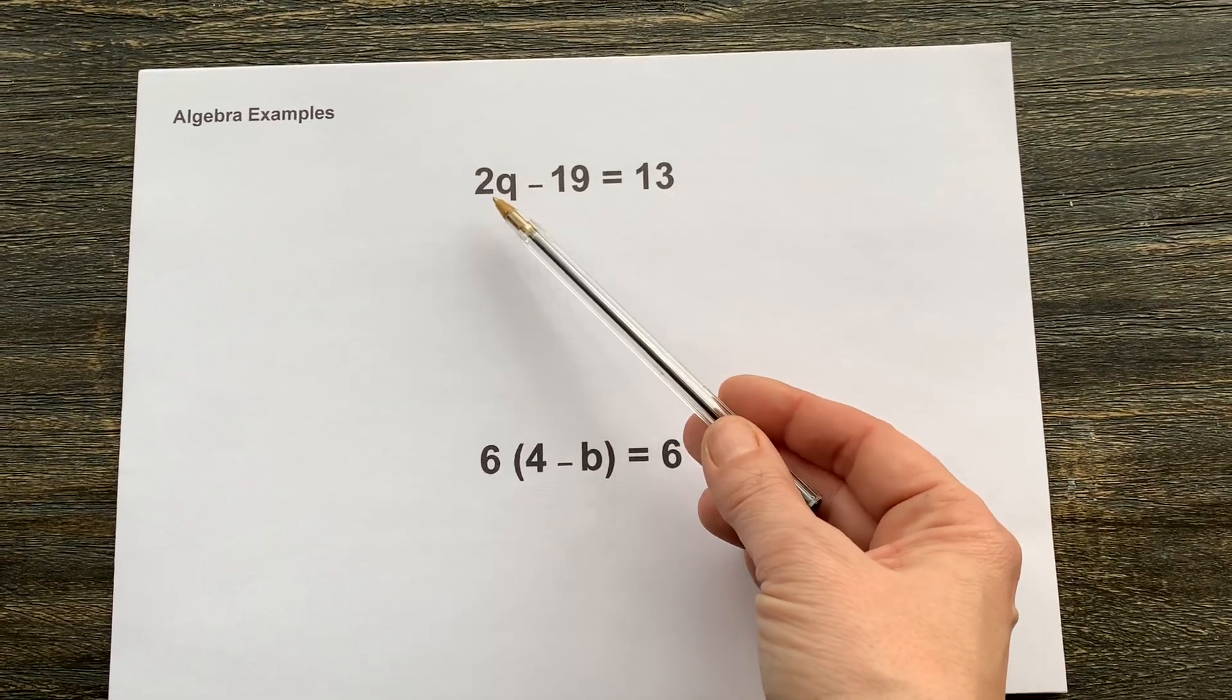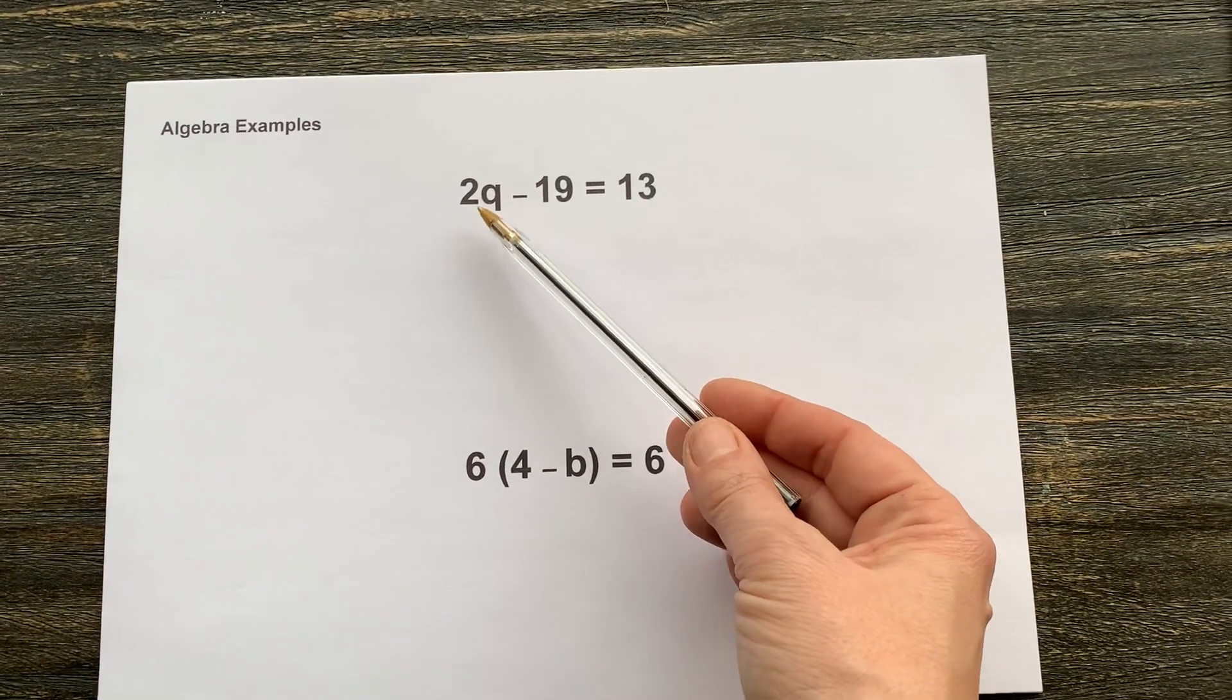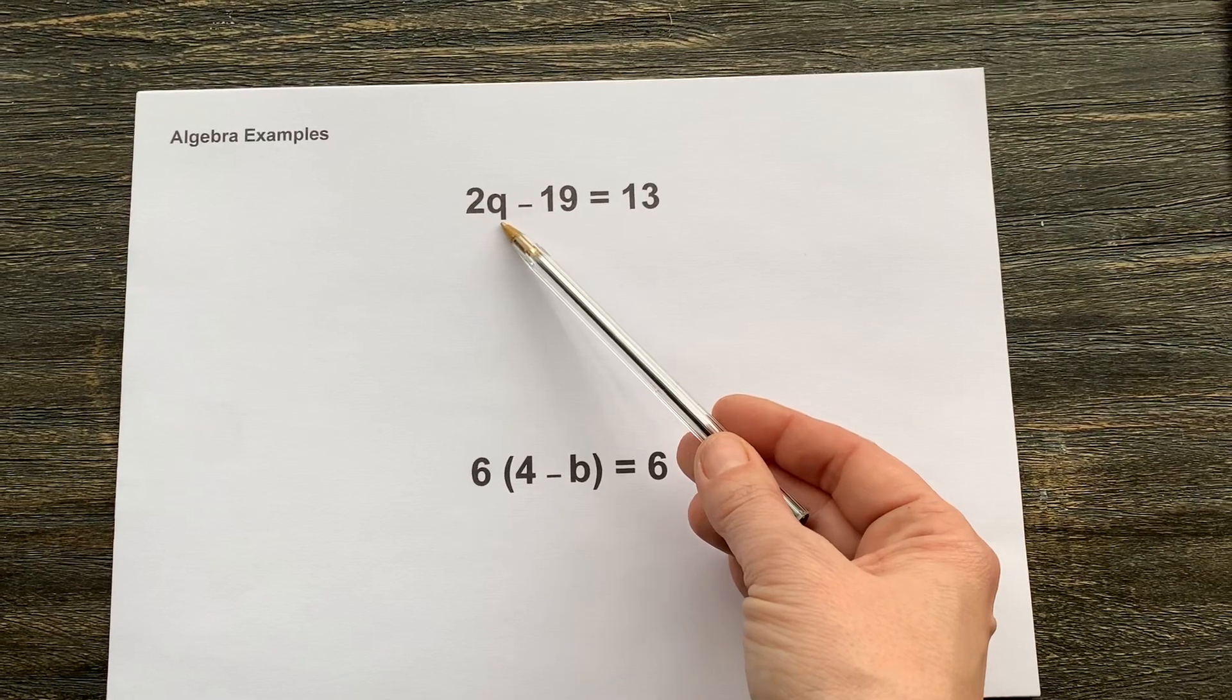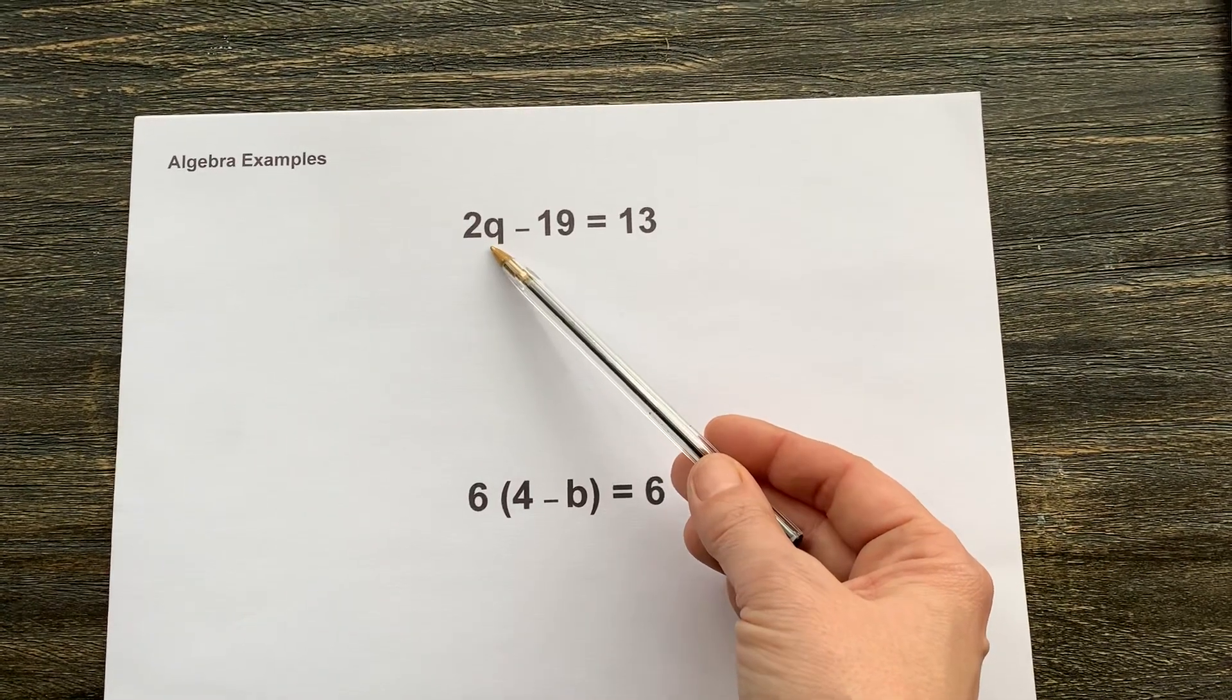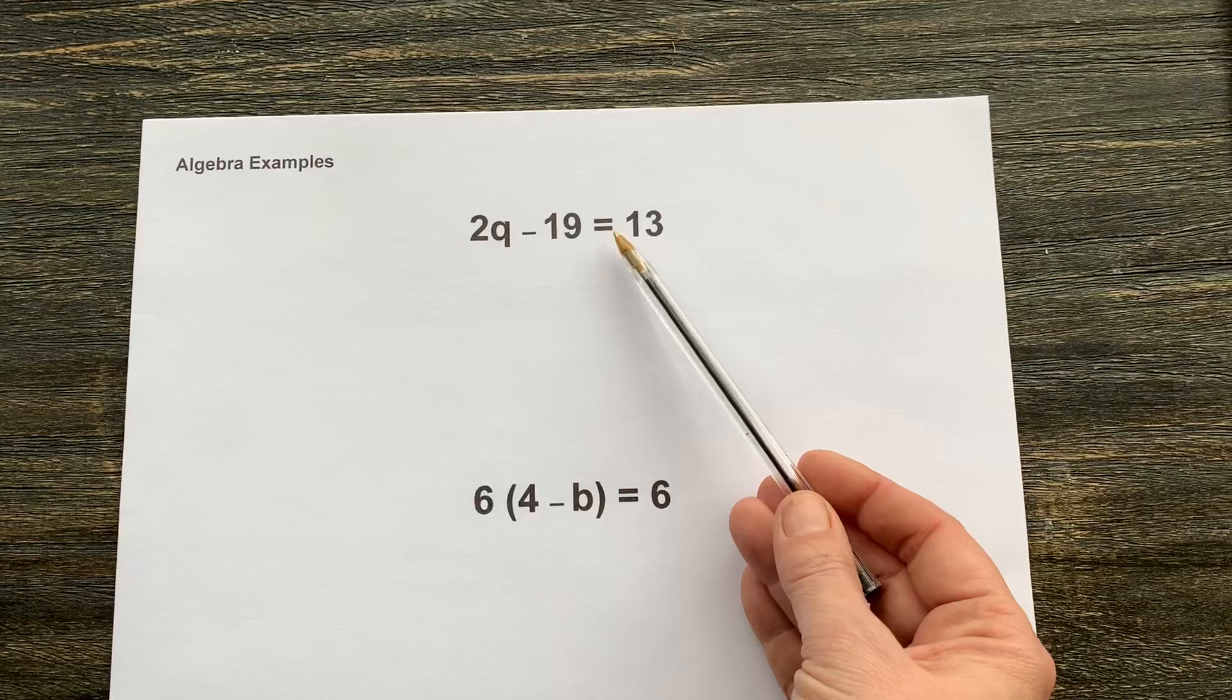When we see a number sitting next to a letter in algebra, we know that it is multiplying that letter. So we have effectively here 2 times q minus 19 equals 13.